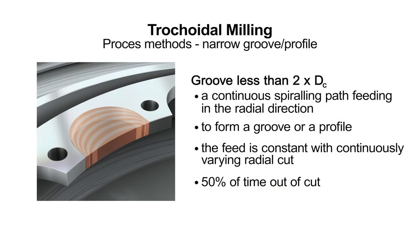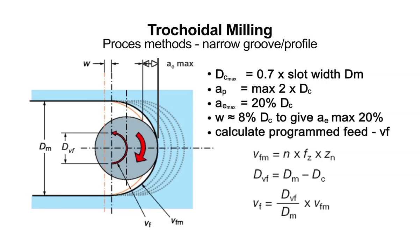When trochoidal milling a feature with a width less than two times the cutting diameter, maintain a constant engagement feed rate while keeping the radial engagement no greater than 20% of the cutter diameter. The slicing step over, W, should be approximately 8% of the cutter diameter.